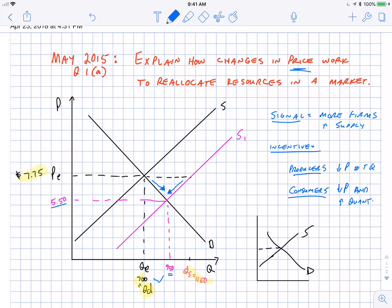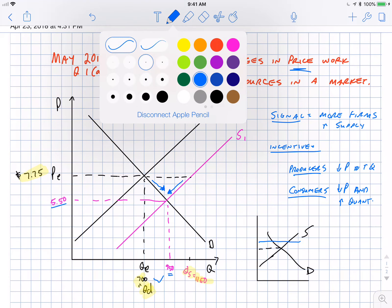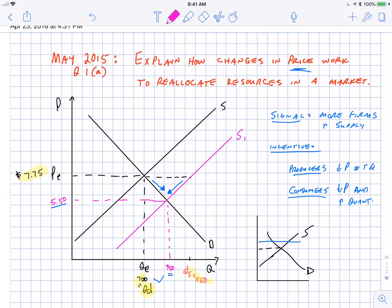We'll do that in blue. And a price ceiling sets the price too low in magenta. So it's good enough to know that those are what they are. But you want to be able to identify surpluses or shortages.